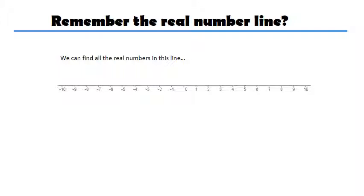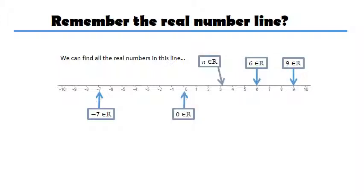So here I can find different numbers like minus 7, 6, 9, 0, pi, 5 halves, square root of 31, minus 3.28. Anyway, those are the real numbers and you can see how they fit in the real number line.